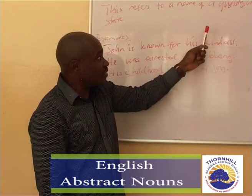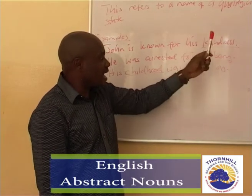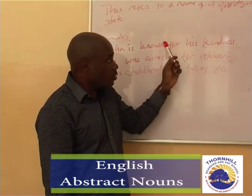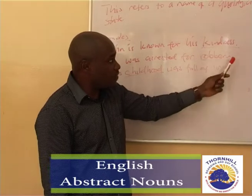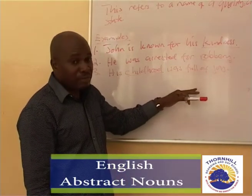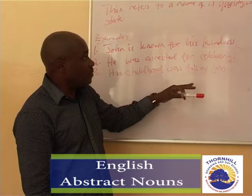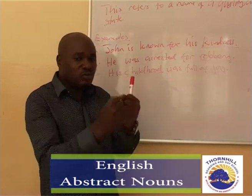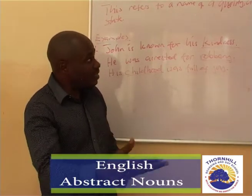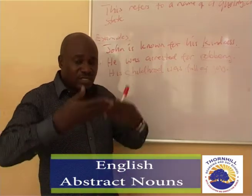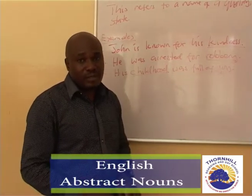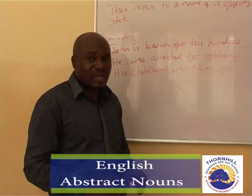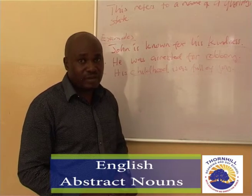Kindness represents quality, robbery represents action, and childhood represents state. As we end this lesson, remember that abstract nouns are not tangible things — you cannot touch them, but they explain a quality, an action, or a state of being. Thank you so much for your attention. Please enjoy attempting the exercises that are going to be given. Thank you so much.